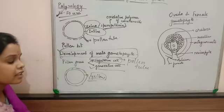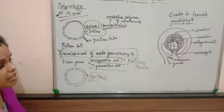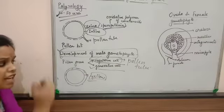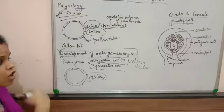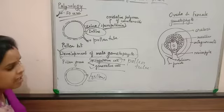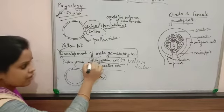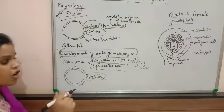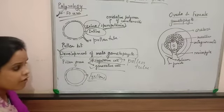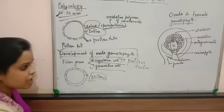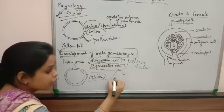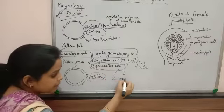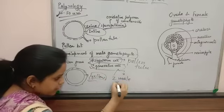The vegetative cell degenerates once the pollen tube has been generated. The generative cell helps in the development of two male gametes.